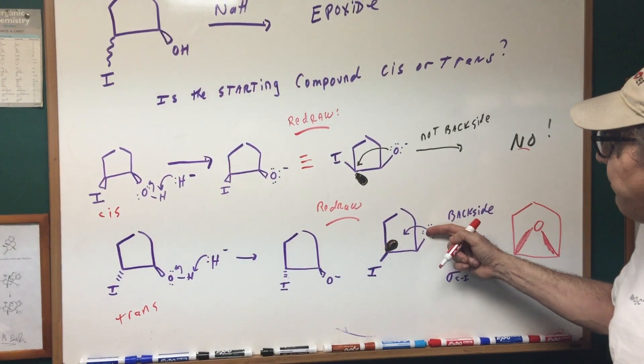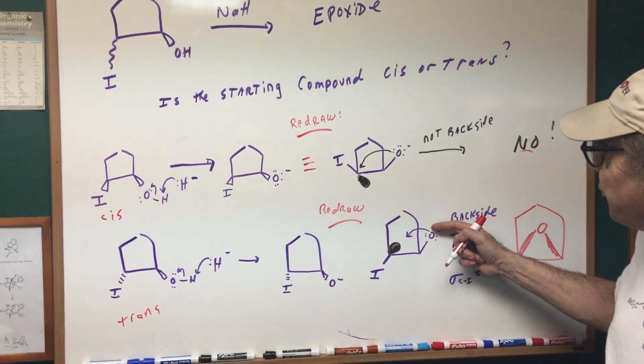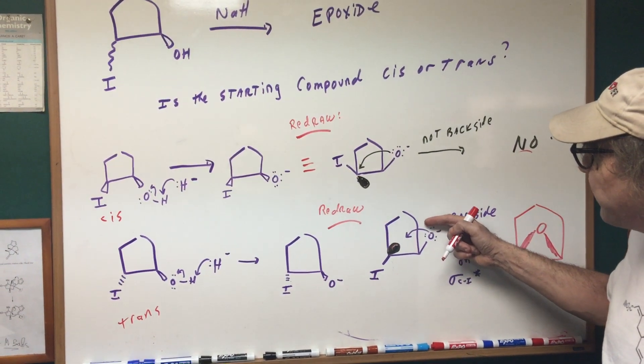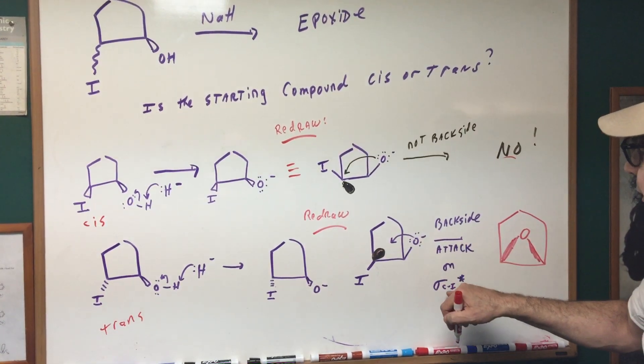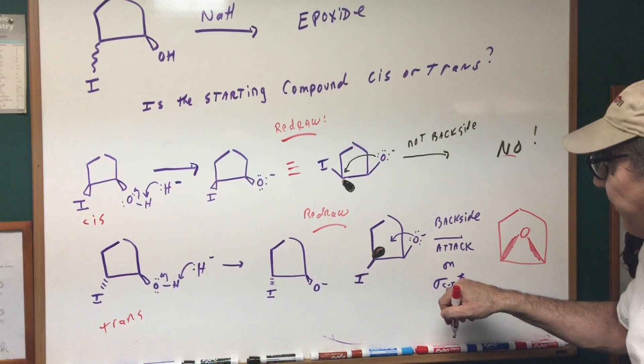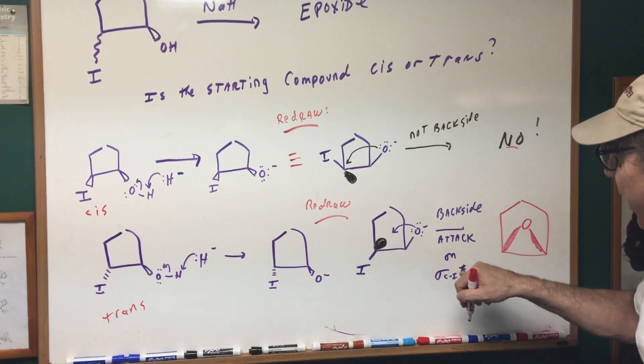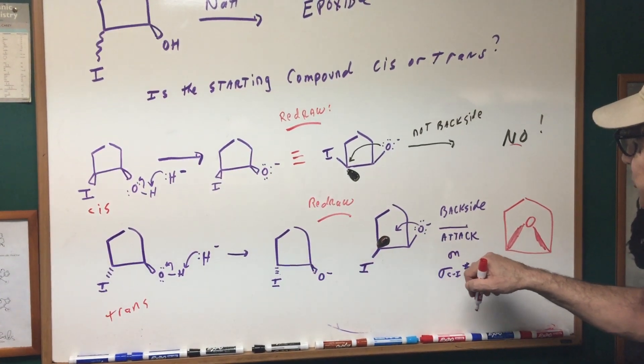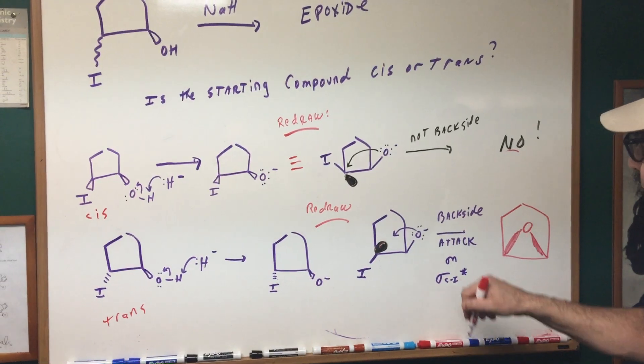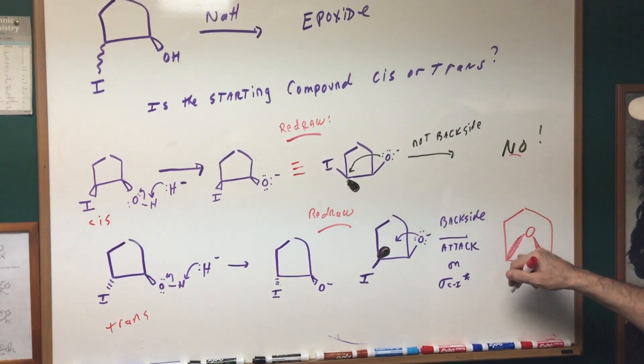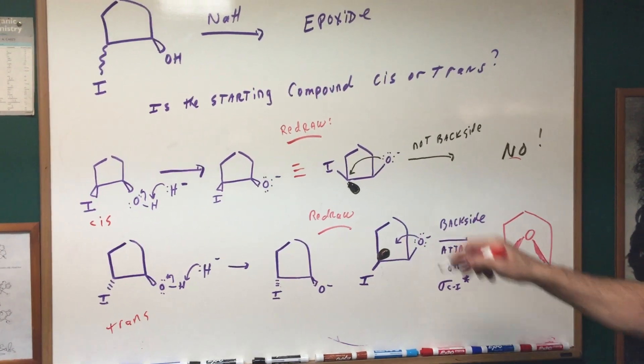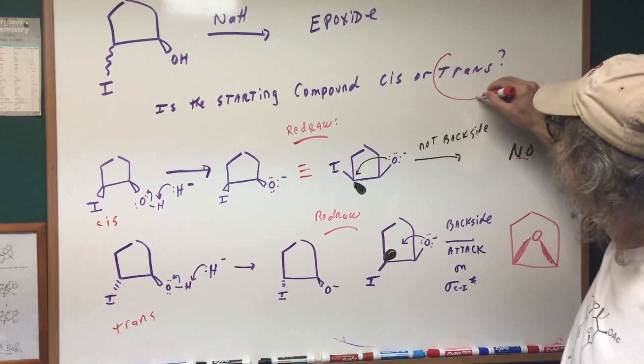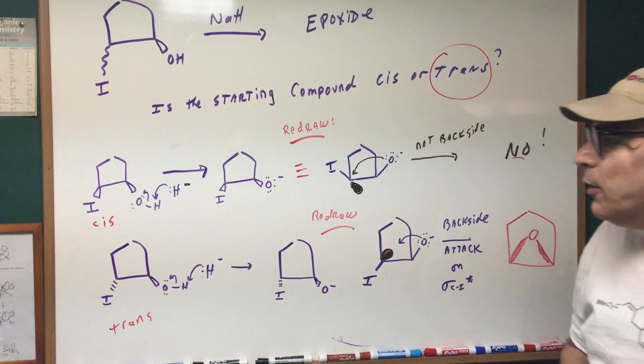And I'm hoping you can see I'm now in perfect alignment. This O- is going to come in from the top, hit the anti-bonding orbital, and do the backside attack. So the orbital that I'm hitting is the sigma carbon to iodine star, anti-bonding orbital. And that would give the epoxide where the groups are going up. So the correct answer is the starting compound would be the trans.